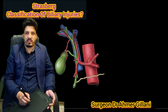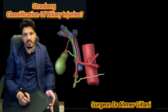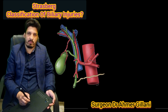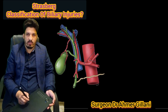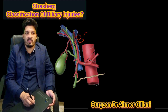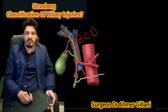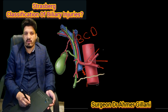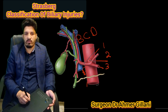Today I am here to explain the Bismuth-Strasberg classification of bile duct injuries. It is divided into A, B, C, D, and finally E. E is further divided into 5 subtypes: E1, E2, E3, E4, and E5.